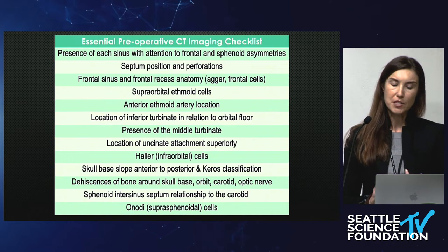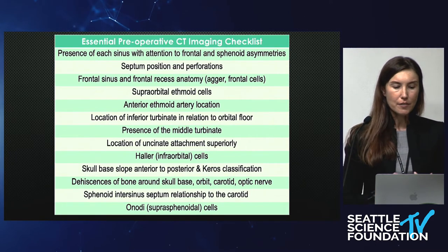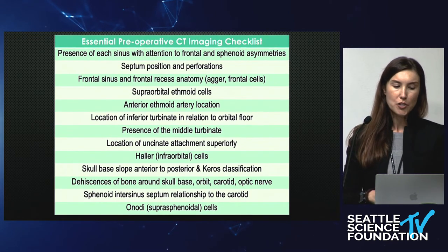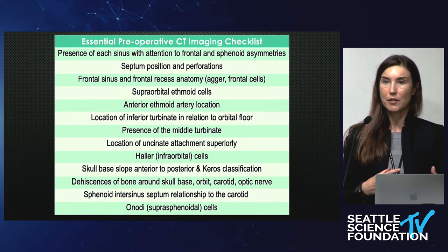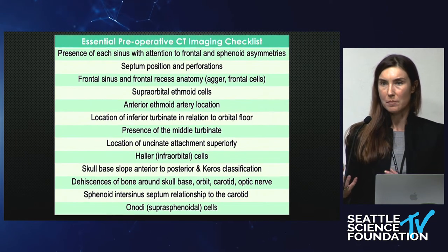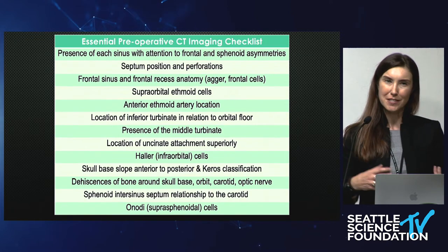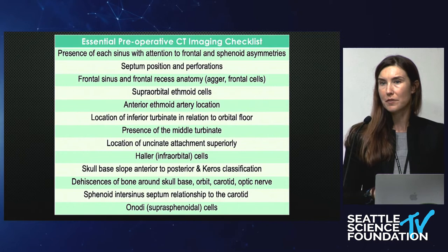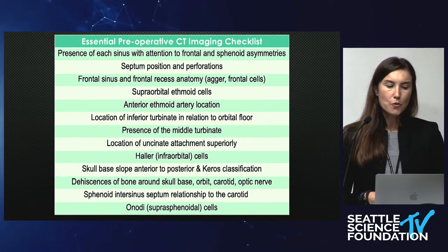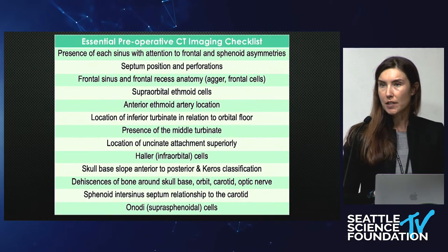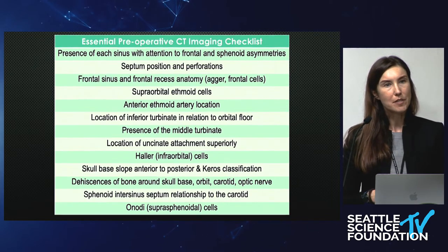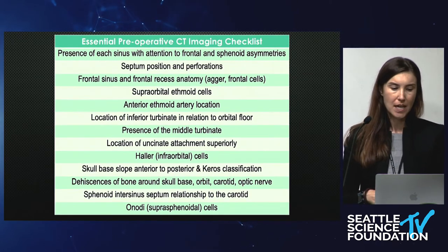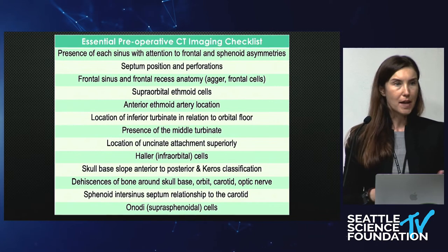You want to look at the septal position and perforations, the frontal sinus and the recess anatomy — do you have additional cells, but also superorbital ethmoid cells, because that's going to impact not only where your frontal is going to be and how big your frontal is versus the superorbital ethmoid cells, but also the anterior ethmoid artery location. And you want to know if that anterior ethmoid artery is within bone. You want to locate the inferior turbinate in relation to the orbital floor — sometimes that's a very small distance, sometimes a very big distance, but it's going to change how you plan your surgery.